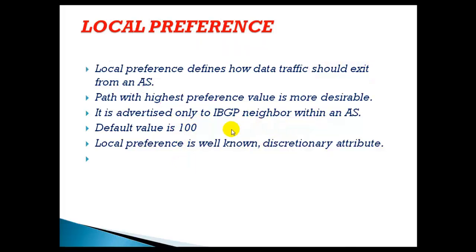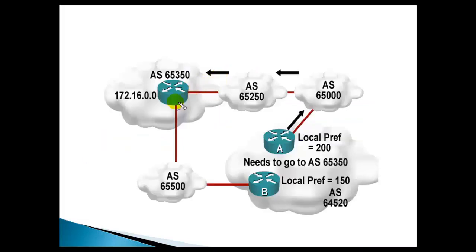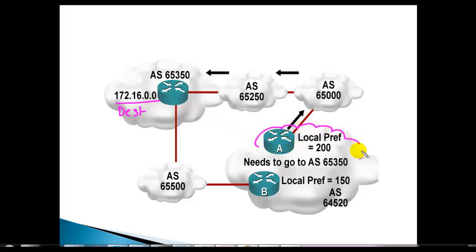Local preference affects all routers within the same autonomous system. For example, if this is my destination network and I have two exit paths — one going via router A and another going via router B — my requirement is to ensure that all routers inside my AS prefer a specific route.